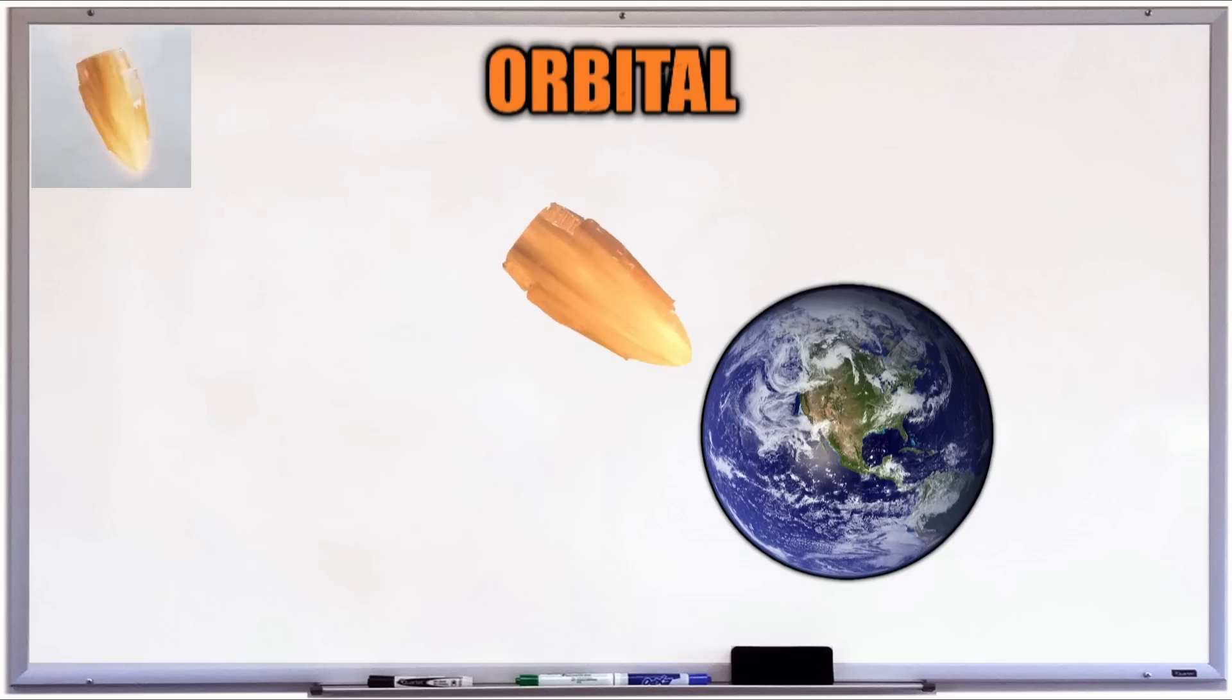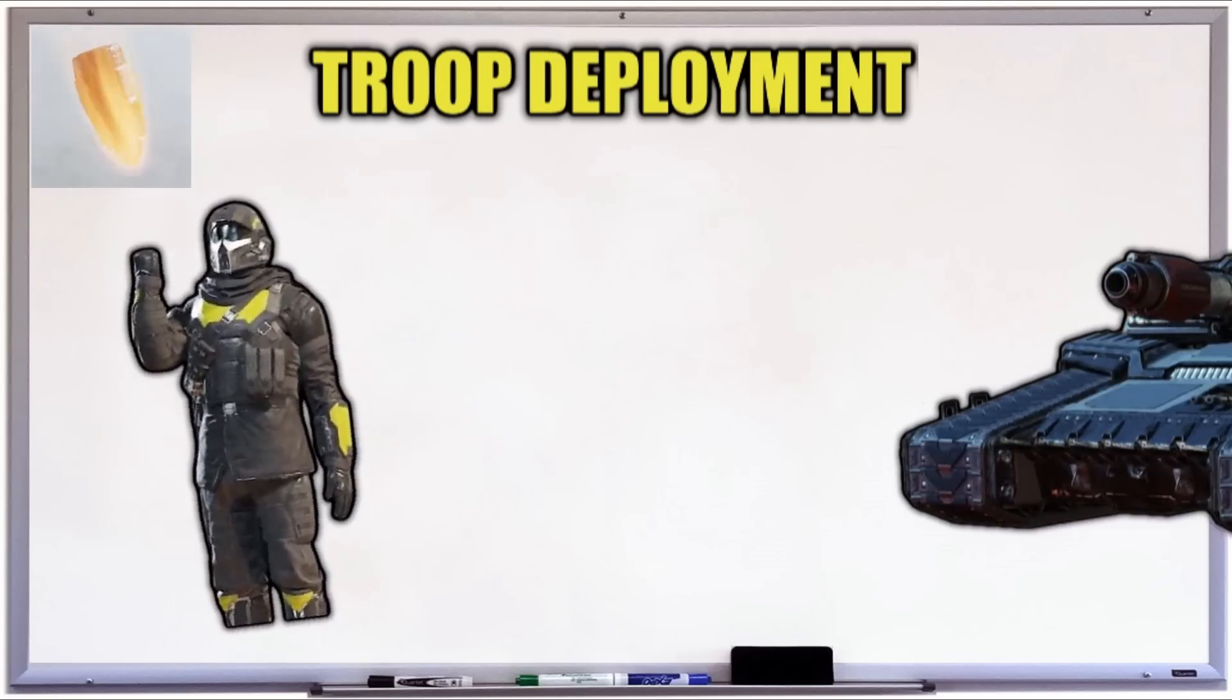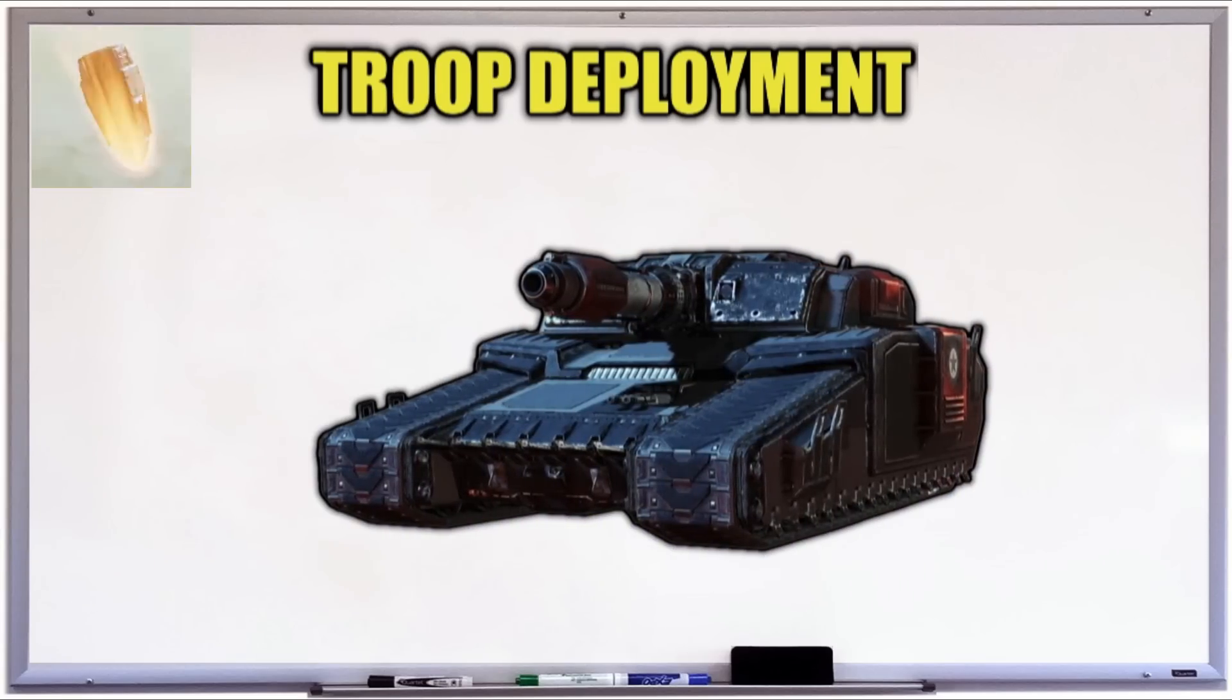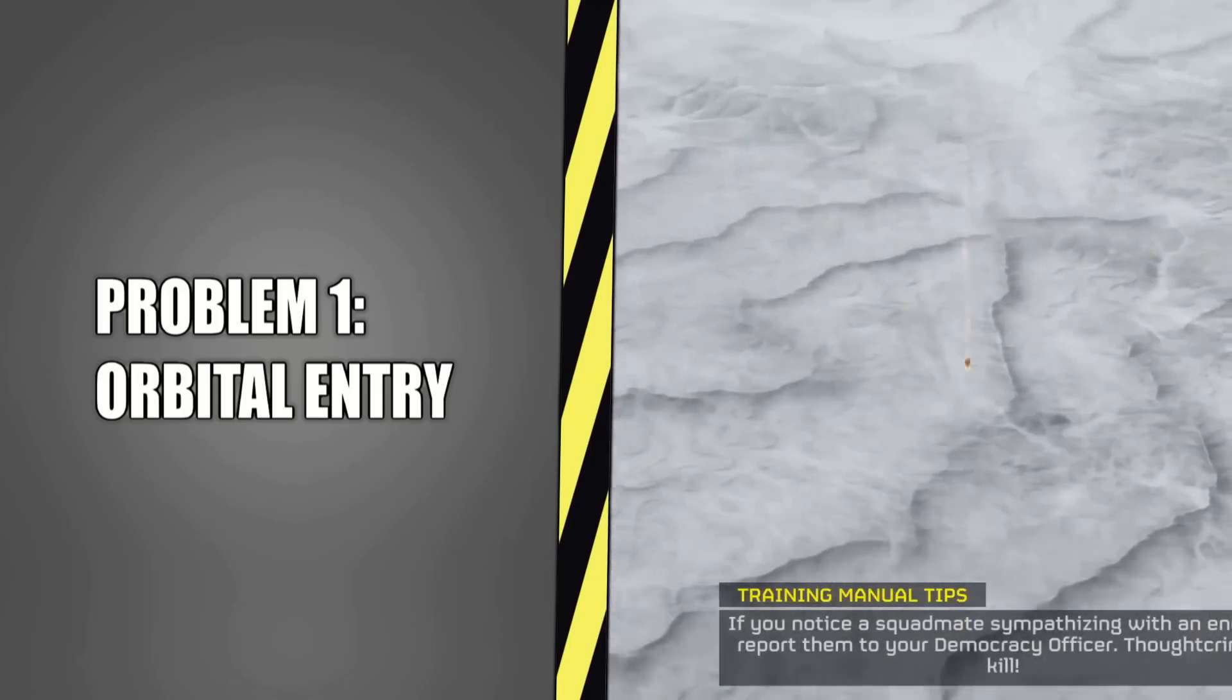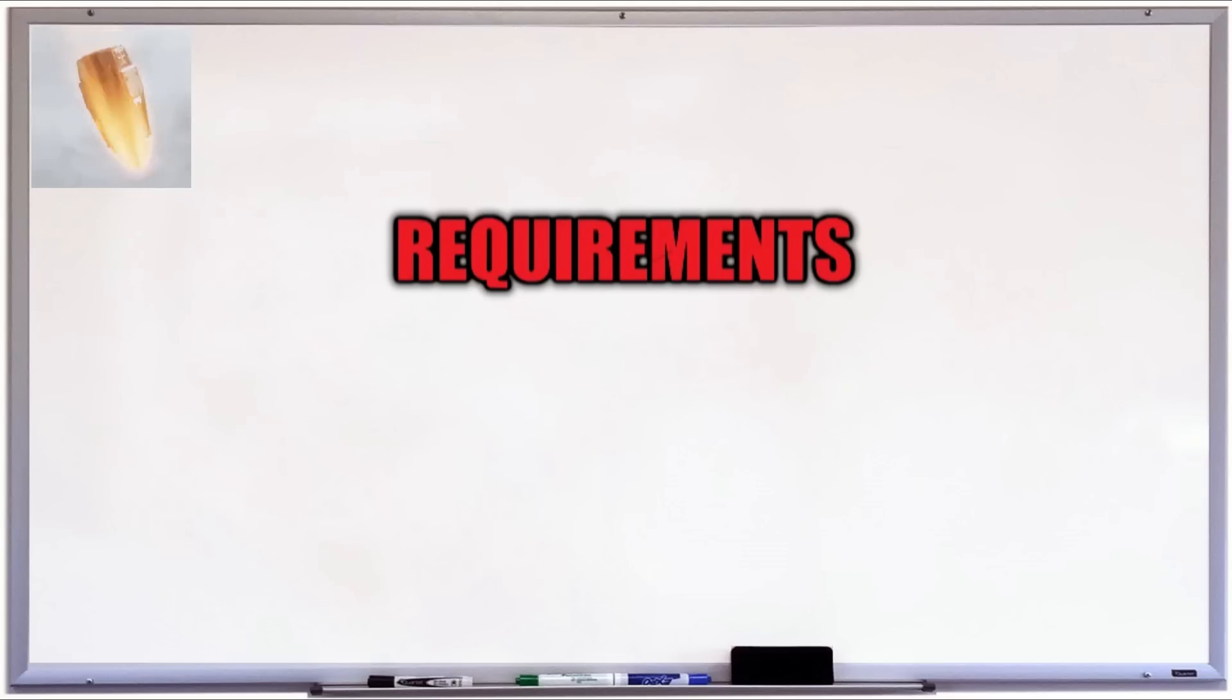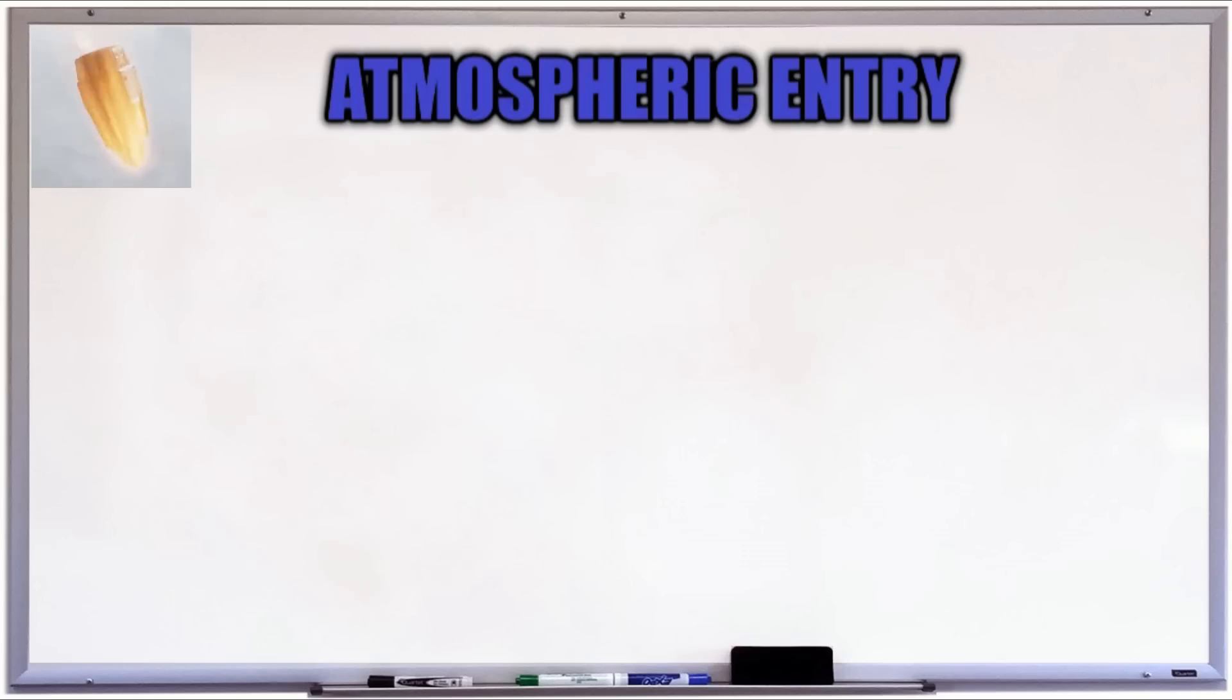Orbital means we're going to need this to survive re-entering the atmosphere of a planet. Troop deployment means it needs to deliver a soldier and all their gear safely to the planet and ready to fight. And vehicle means, well, vroom vroom. Now that we've established our purpose and requirements, it's time to tackle our first problem: orbital entry.